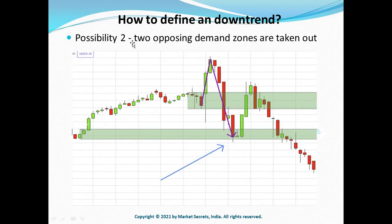Now let's look at possibility number two. For possibility two, at least two opposing demand zones should be taken out and there should be no possibility to draw a bearish downtrend line. As discussed in the last episode, the reason for this second possibility is that it is sometimes not possible to draw a trend line based on our rules. So we consider the downtrend has begun if price has taken out two demand zones.